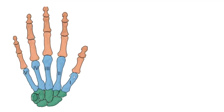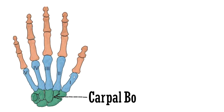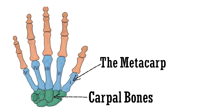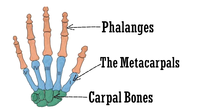The bones in the hand can be divided into 3 parts: the carpal bones, metacarpals, and the phalanges. We will discuss each of these separately and see what anatomical features they possess.